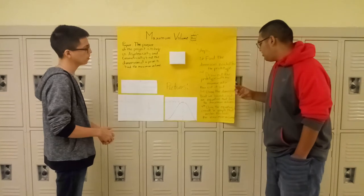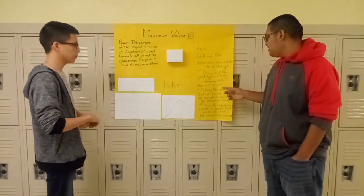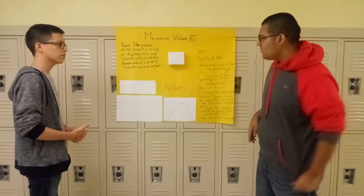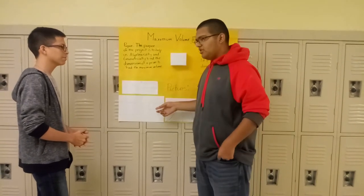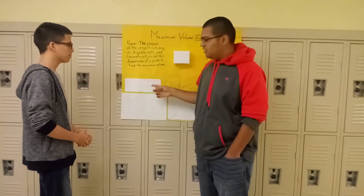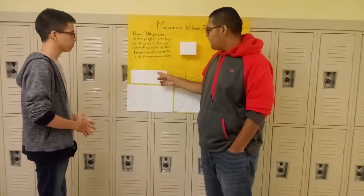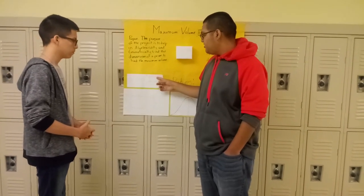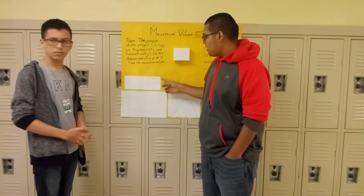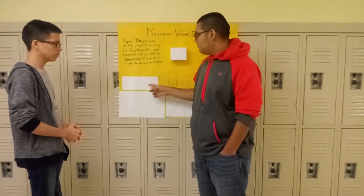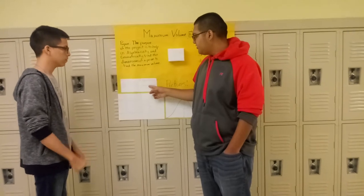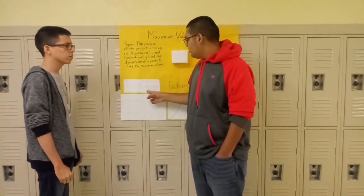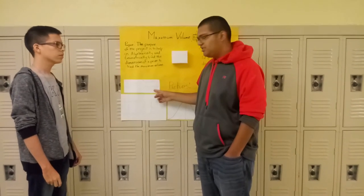That leads us to our third step: using the dimensions that we found, we create an equation that finds the maximum volume. Using the prototype, we created the volume equation, which will be V equals 35.5 divided by 2 minus x, times 21.5 minus x, times x. We found that our maximum volume is at x equals 6, which gives us 35.5 divided by 2 minus 6, times 21.5 minus 6, times 6, which gives us a volume of 1092.75 cubic centimeters.